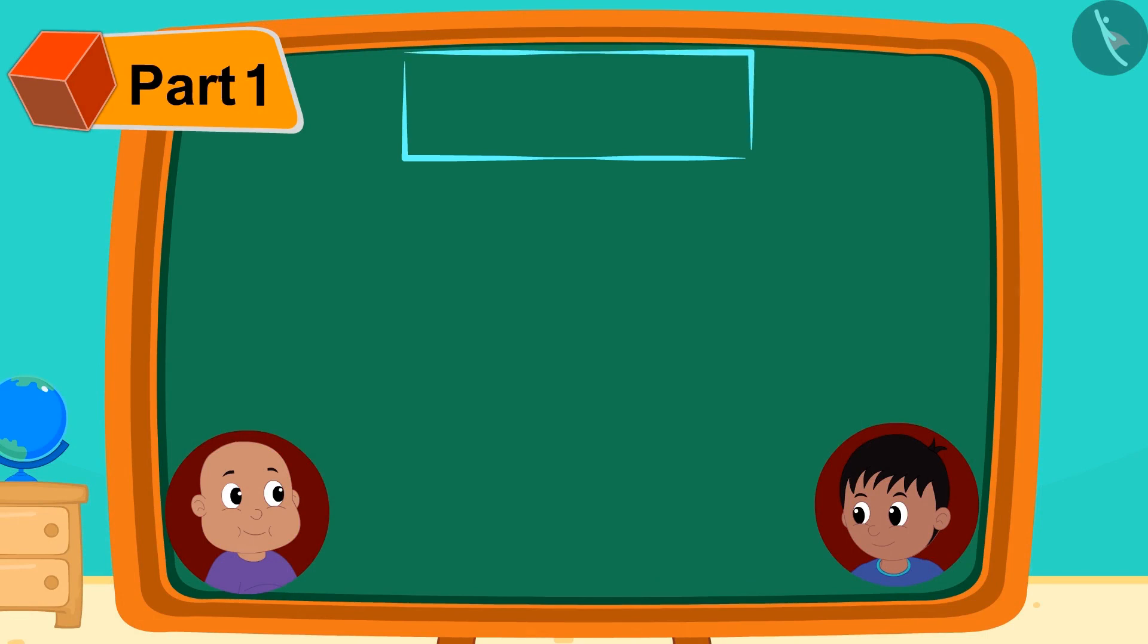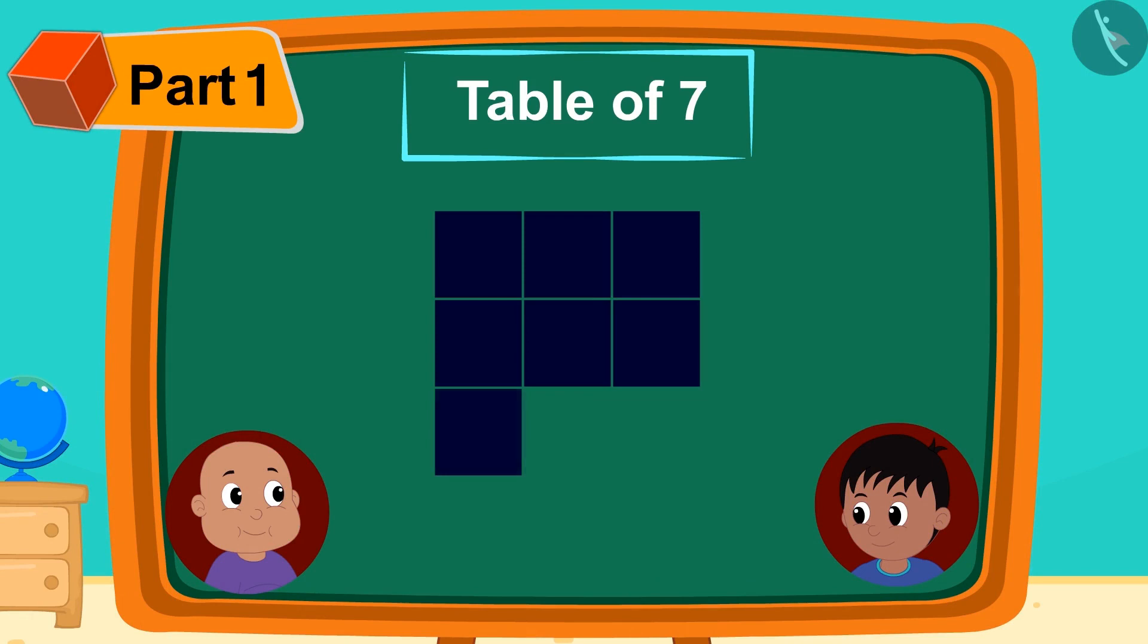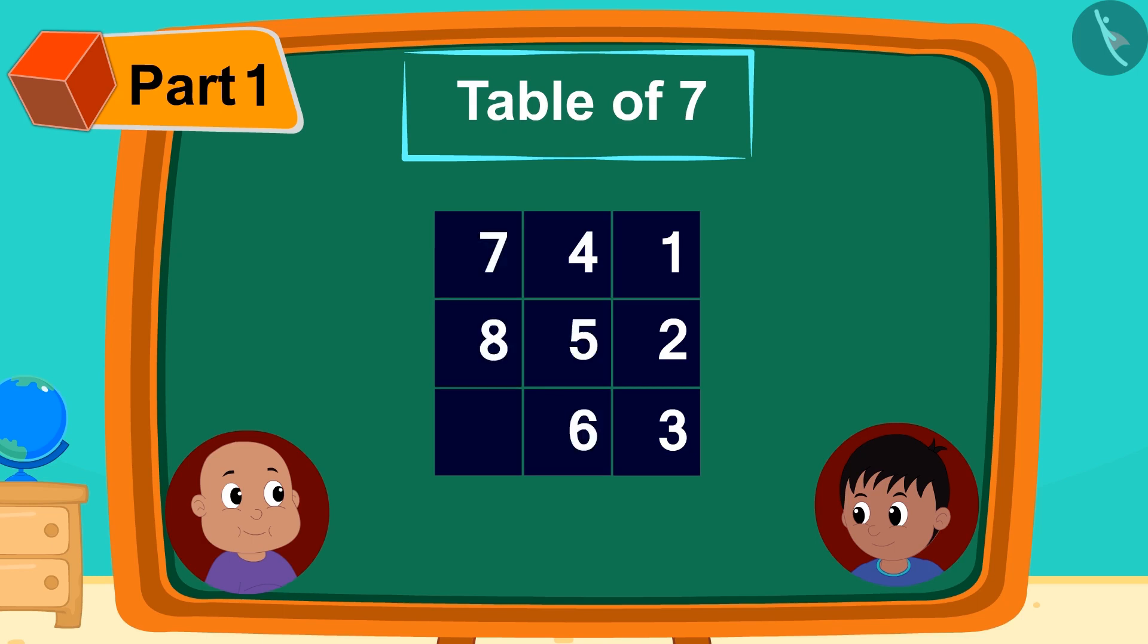Now Raju made a structure similar to the table of 3 for a table of 7. But this time, Raju started writing numbers from 1 to 9 from this box. Then, next to the digits written in the first line, he wrote 0, 1, 2.